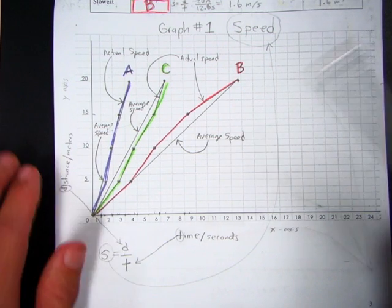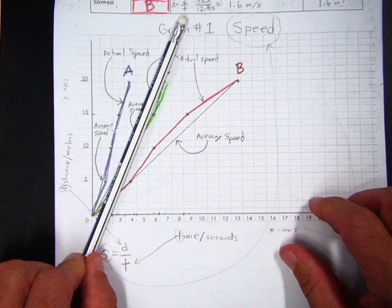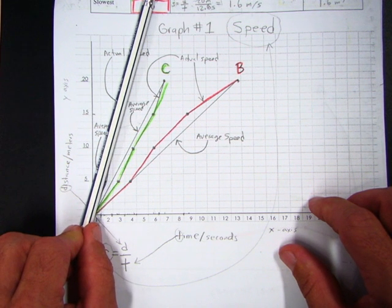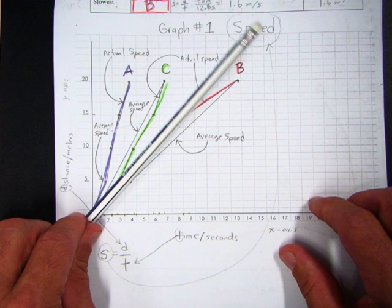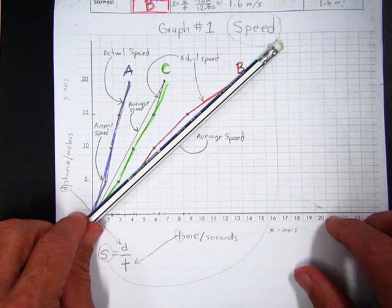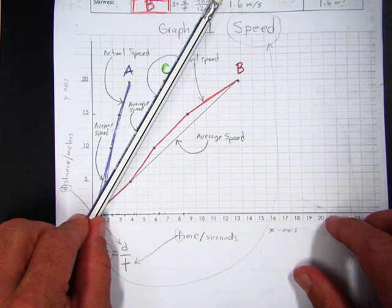Another thing I want to point out is if you notice the slope here. A was our fastest RC car in our race. Look how steep that line is. B was the slowest. Notice it's not as steep. C was our average speed for our car.